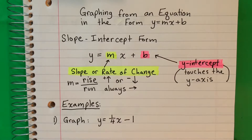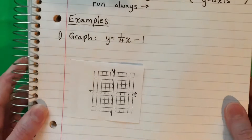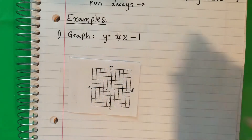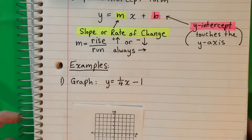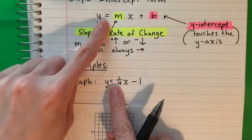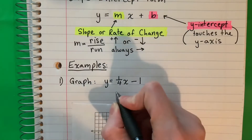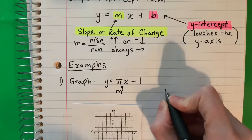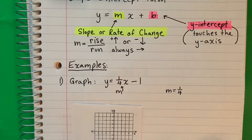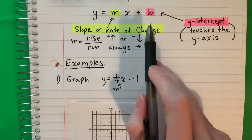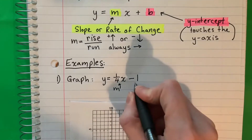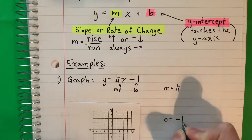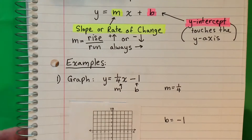Example number one: graph y equals one-fourth x minus one. I have two numbers here. The number with x is my m, my slope. So my slope m is one-fourth. And then the negative one is my b, which is my y-intercept. So b is negative one.